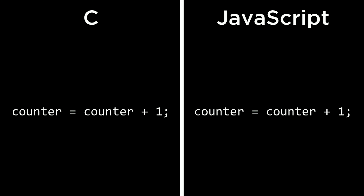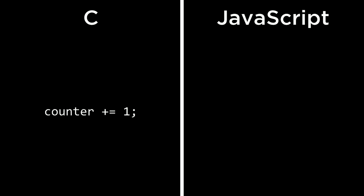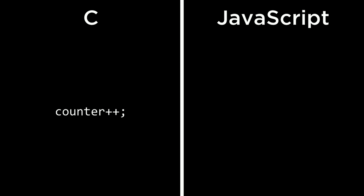If we want to manipulate a variable in JavaScript, it's identical to how we might do it in C. In C we could say counter = counter + 1, and that exact same syntax works in JavaScript. Likewise, the shorthand we used in C — counter += 1 and counter++ — also applies to JavaScript, incrementing the counter variable by 1.